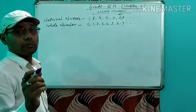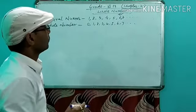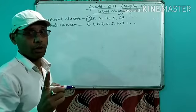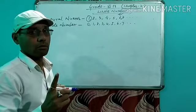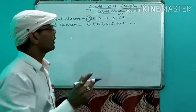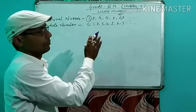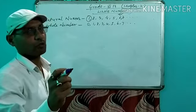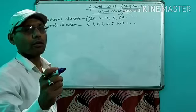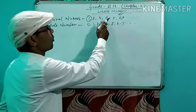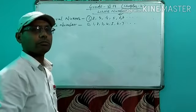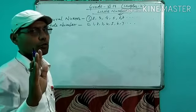One thing here you have to understand. The smallest natural number is 1, and the largest — can you write it? No. The largest natural number is not defined. Why? Because every natural number has its own successor. By adding 1 to any given number, you can get the successor. For example, the successor of 4 is 5, successor of 6 is 7. In this way, you cannot write the largest natural number.